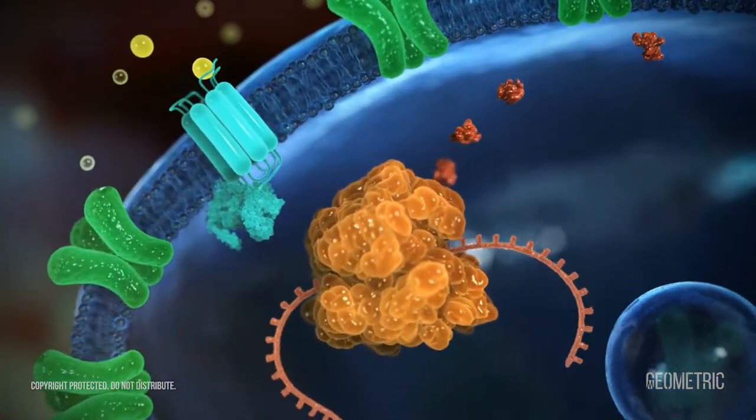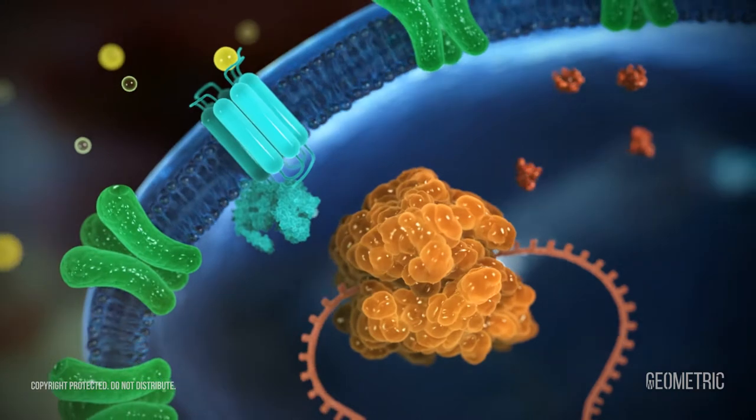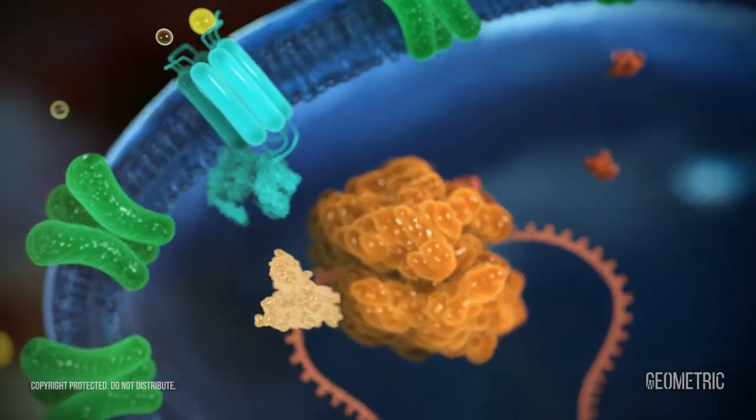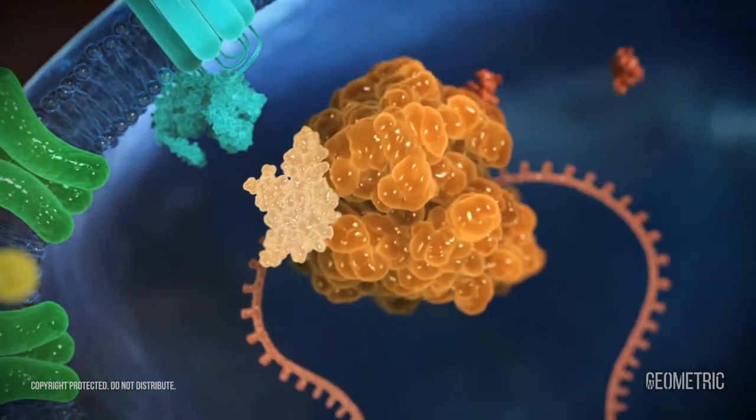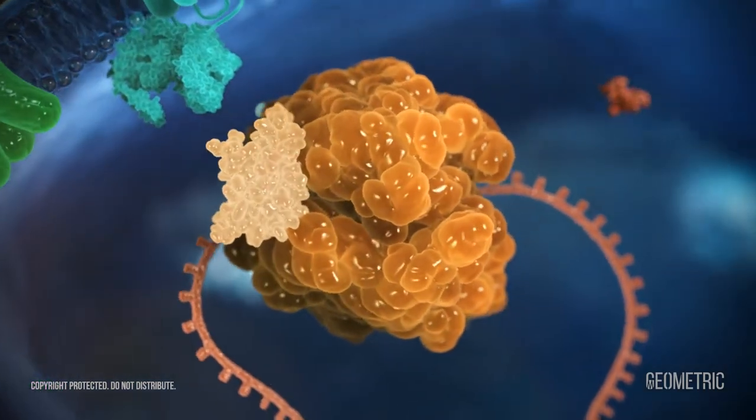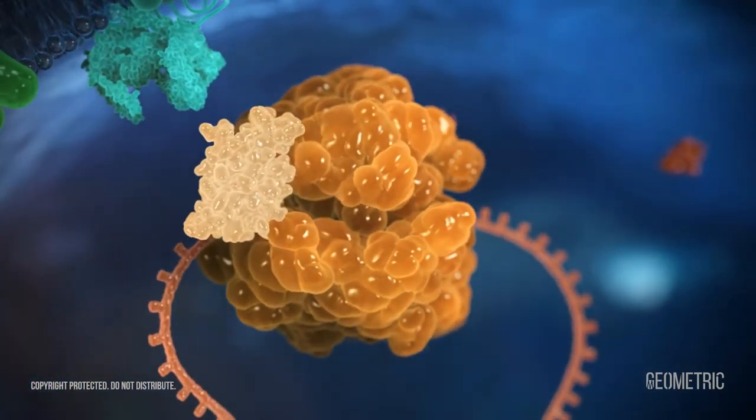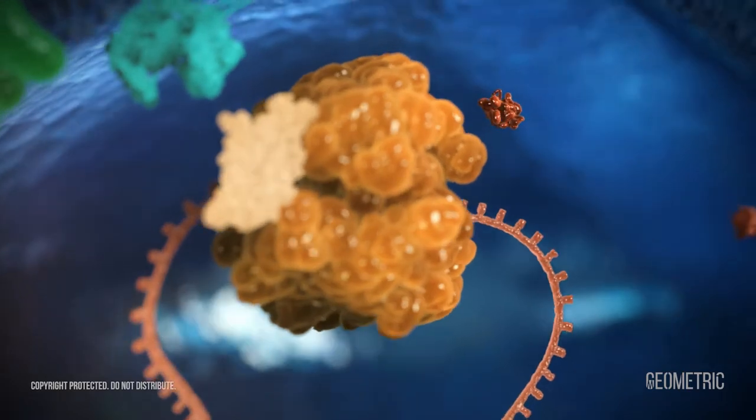The proteins made when glutamate contacts mGlu-R5 facilitate the removal of AMPA and NMDA receptors. FMRP slows the synthesis of these proteins and thus helps maintain AMPA and NMDA receptors in cell membranes.